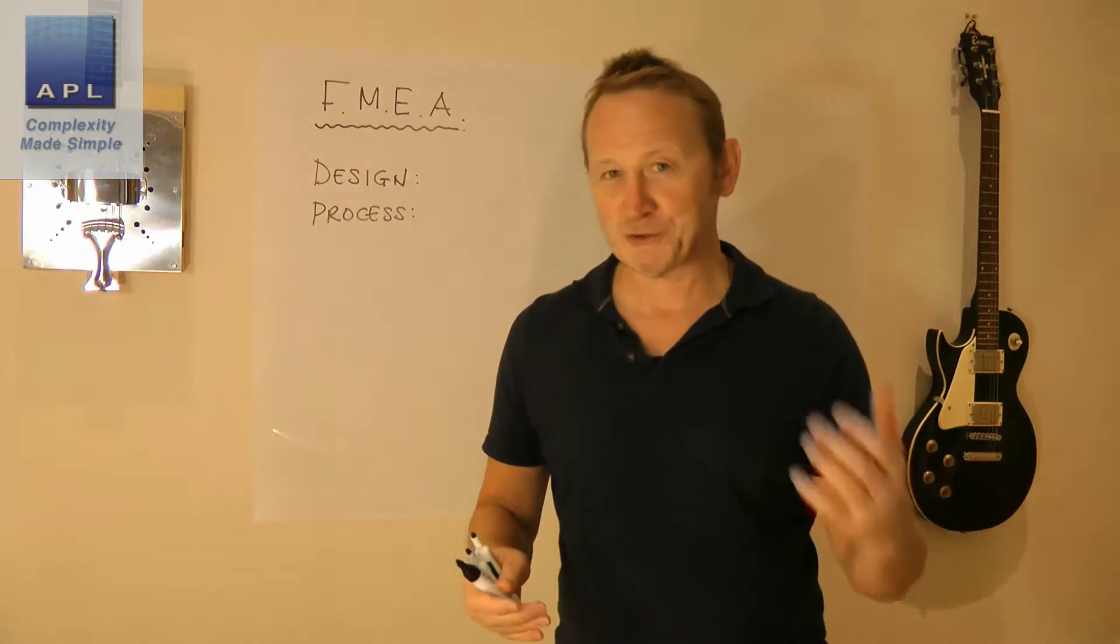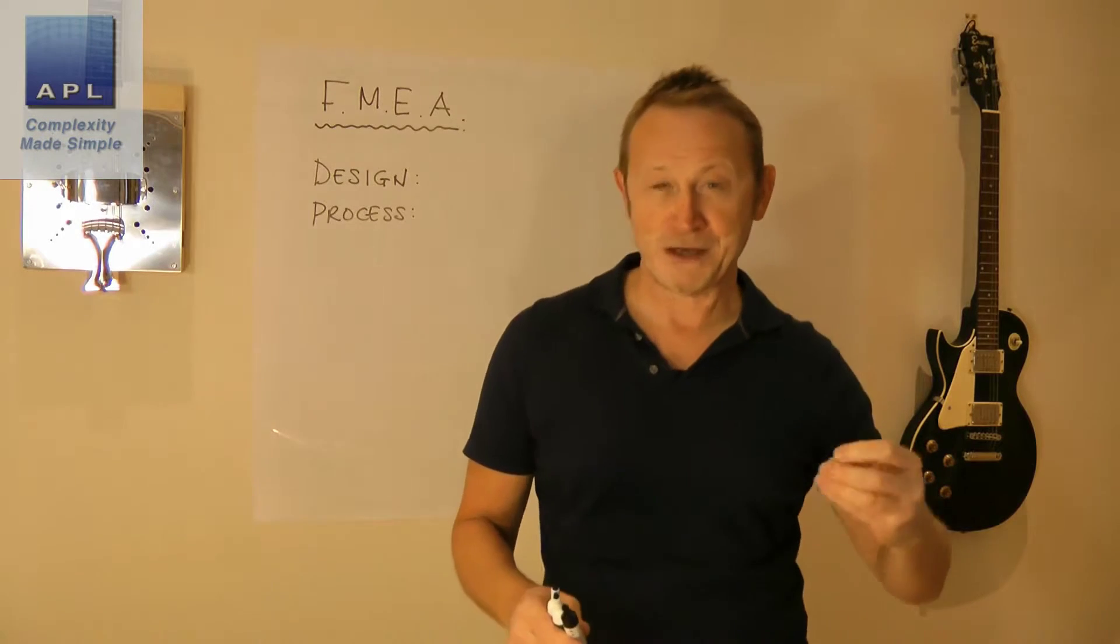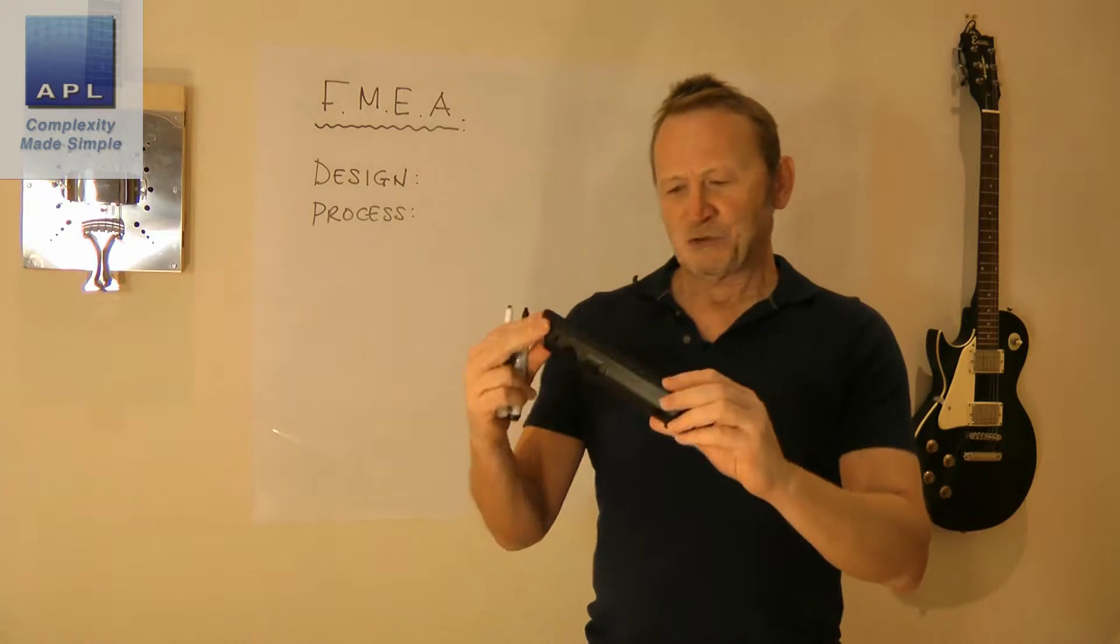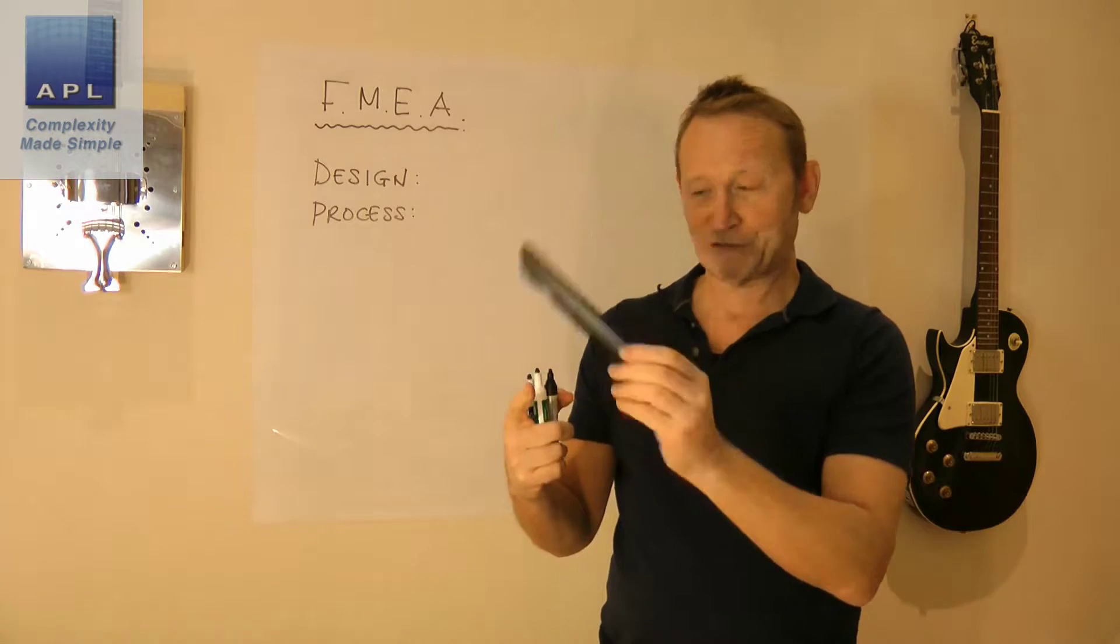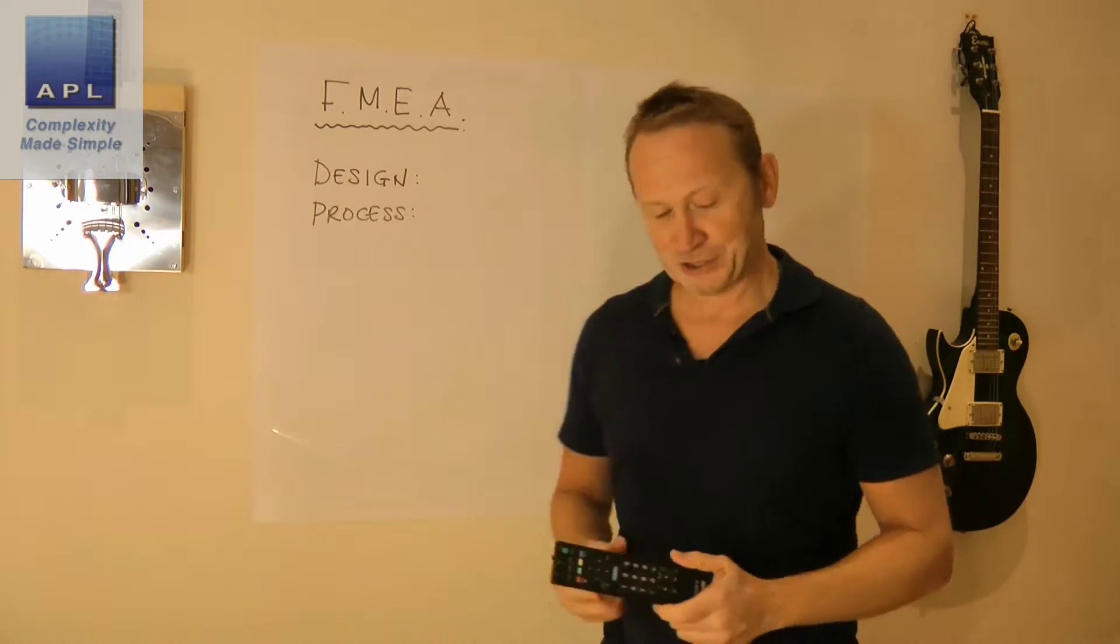So we're going to talk through the principles. I'm going to use a little silly example but it'll make a point as to how design FMEA and process FMEA are really supposed to work together. So the example we're going to take a look at, we're going to look at the idea of designing this remote control. This is the remote control for my TV so we're going to start with a design FMEA.